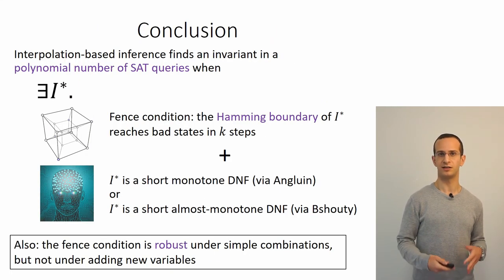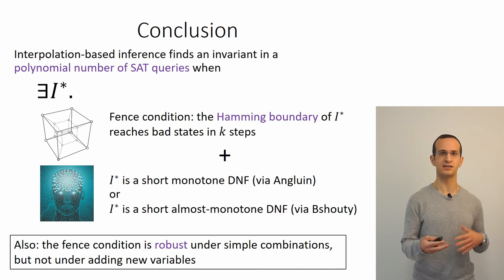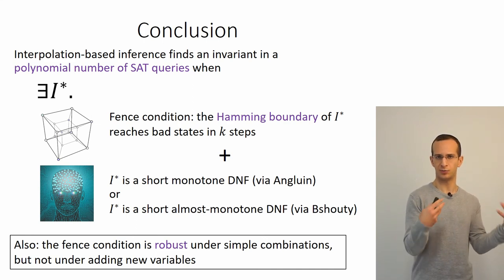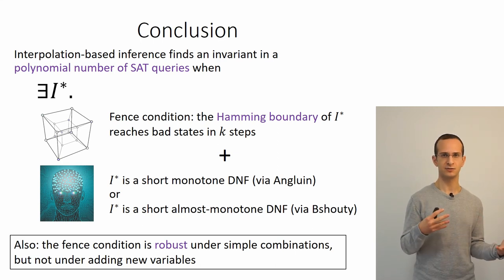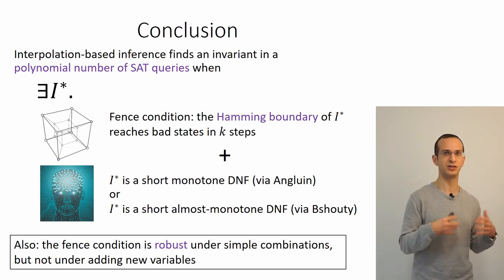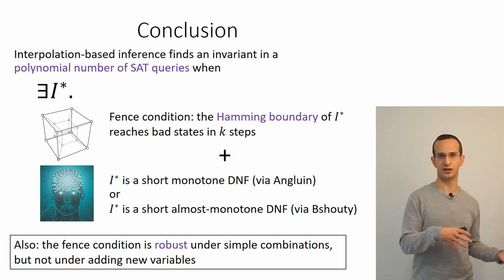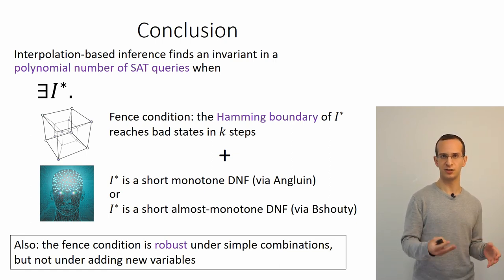Overall, we have shown that interpolation-based invariant inference can infer an invariant in a polynomial number of SAT calls whenever there's an invariant that satisfies the fence condition—a property of the reachability of the Hamming boundary of the invariant—and has a syntactic form matching results in exact concept learning, leveraged via a special transformation from classification to invariant inference. We also discussed the robustness of the fence condition and the effect program transformations could have on invariant inference. Thank you very much.